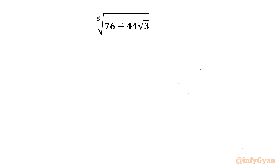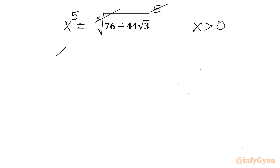Let's get started by writing this 5th root equal to x. One thing is sure: x should be greater than 0. Now I will raise both sides to power 5. This 5th root and power 5 will cancel, so we will have x power 5 equal to 76 plus 44 square root 3.